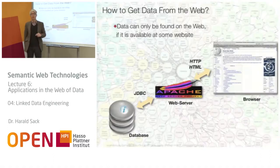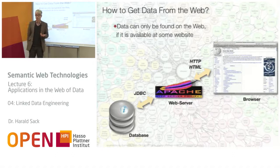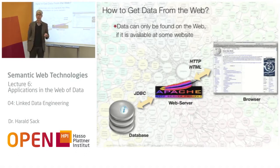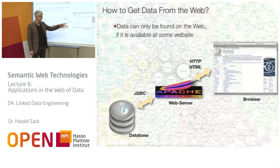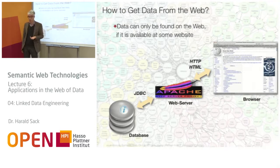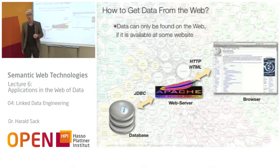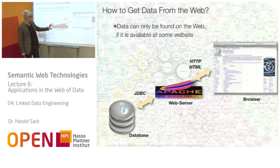It's about data on the web. How do I get data from the web today? Of course, data can be found on the web and it's available on some websites. You have tables there with data inside. Usually, you have a web server that delivers the HTML page you see in your browser via HTTP protocol. A database is usually connected to the web server, sometimes via JDBC as an interface, and then the data comes from the database to the web server and is transferred to the user via HTTP.